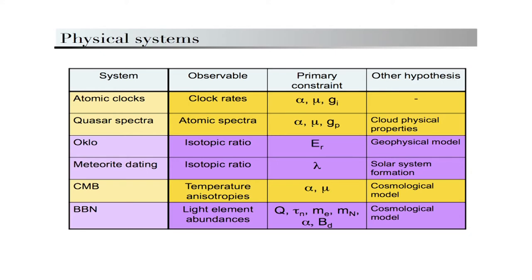Different systems involve different kinds of observables and different constants. For atomic clocks we compare clock rates, which depend on the fine structure constant alpha, the ratio mu between the electron mass and proton mass, and the gyromagnetic factors g. Alpha is a fundamental constant in the Lagrangian. Mu is a ratio of two masses: the electron is fundamental, but the proton is made of quarks, so expressing mu in terms of the theoretical Lagrangian requires computing the proton mass from quark masses and strong binding energy — a very difficult computation. The same is true for the gyromagnetic factors.